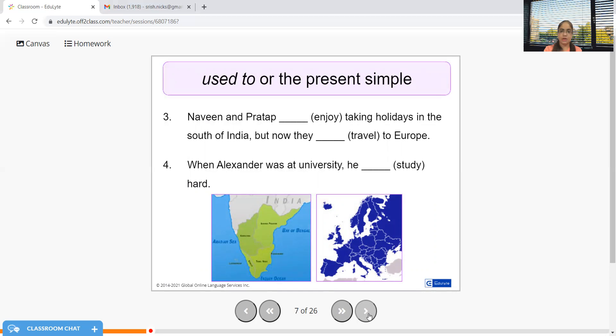Naveen and Pratap used to enjoy taking holidays in the south of India but now they travel or they love to travel to Europe. When Alexander was at university he used to study hard.